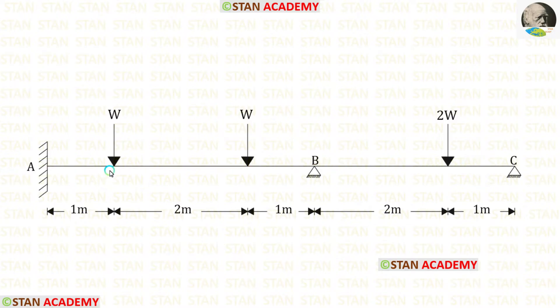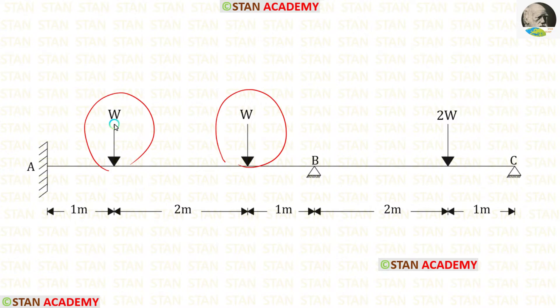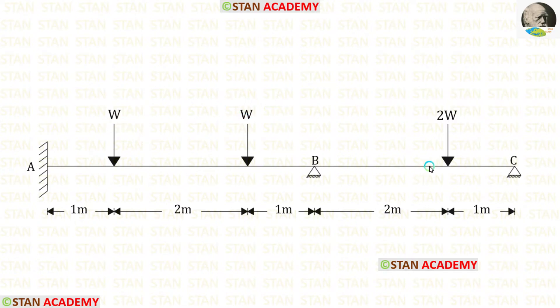In span AB, we have two point loads. Both of them are W. In span BC, we have a point load which is 2W.